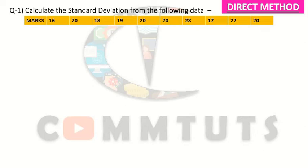We will understand this method with the help of a question. The data given is students' marks: 16, 20, 18, 19, 20, 20, 28, 17, 22, 20. These are simply marks — this is individual series.